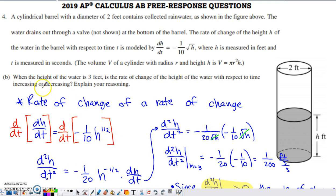In part B, they say when the height of the water is three feet, is the rate of change of the height with respect to time increasing or decreasing? So they're asking us about the rate of change of a rate of change. A derivative is a rate of change, and the second derivative represents the rate of change of that rate of change.